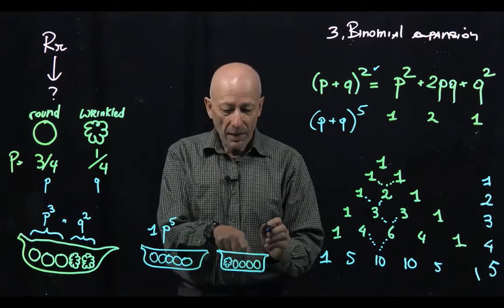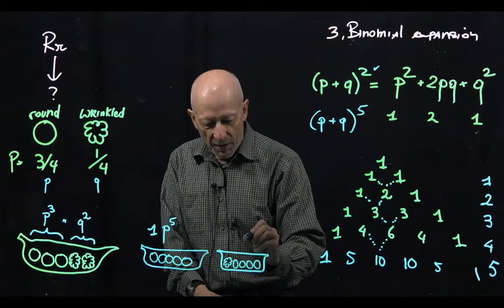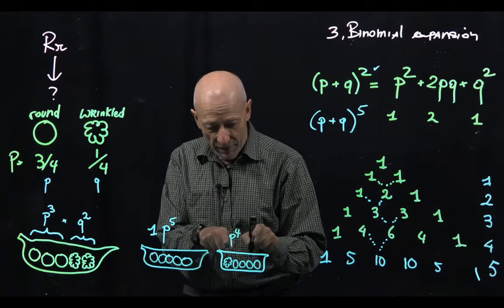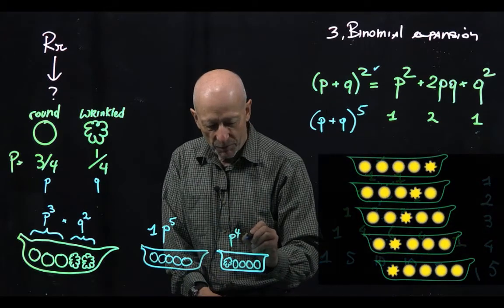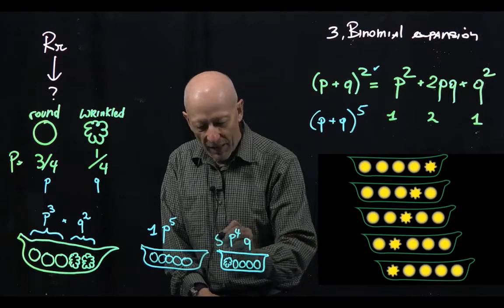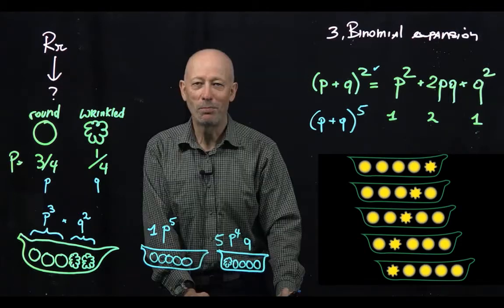Now we know that an individual pod here will have p to the 4, a given pod will have p to the 4, q to the 1, and the coefficient is now 5. There are 5 of these pods.